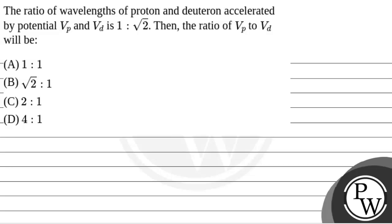Hello, Bacho. Let's read the question. The question says that the ratio of wavelengths of proton and neutron accelerated by potential VP and VD is 1 is to root 2. Then the ratio VP to VD will be?